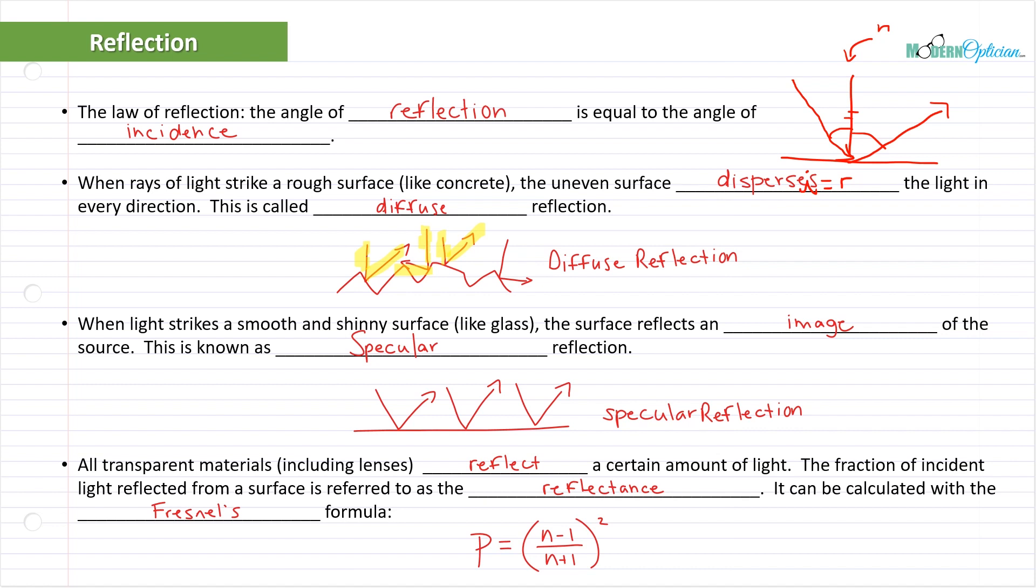This is the first formula we'll encounter together - the Fresnel formula. P is reflectance, and N is refractive index. We're jumping ahead a little, but that's okay. The beauty is that I don't expect you to calculate reflectance - you'll never be sitting in the lab calculating the reflectance of particular lens materials. However, I'm about to show you how it's calculated and what it means. This is conceptual because I want you to understand why we use things like anti-reflective coatings and why certain lenses need it and others don't.